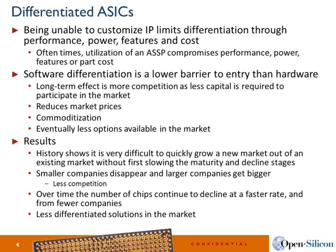Software is a way to differentiate even on an ASSP, but the problem with software differentiation is it's a lower barrier to entry. The cost to get into it makes it easier for other companies around the world to make products that compete with you. It reduces market pricing, it commoditizes things, and eventually you'll have fewer companies making end products. If there are fewer products, there will eventually be fewer semiconductor companies, and eventually IP will also be in trouble.